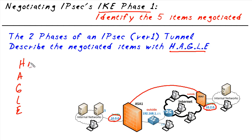The H is for hashing. Hashing algorithms are used to verify data integrity. Popular hashing algorithms would be, for example, MD5 and SHA.